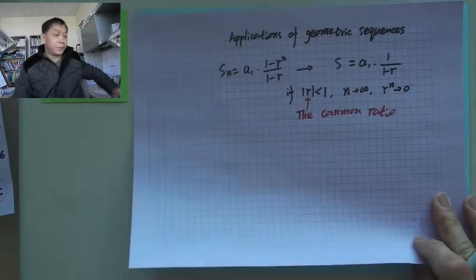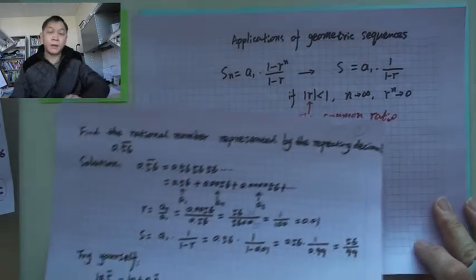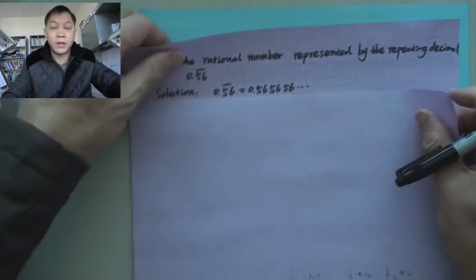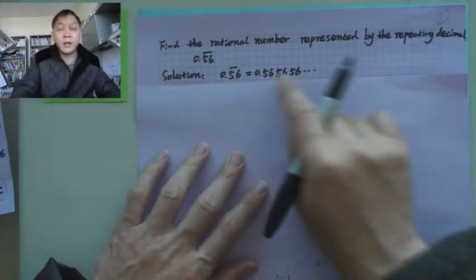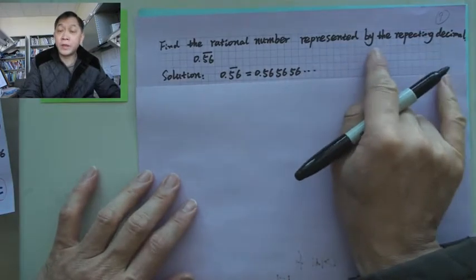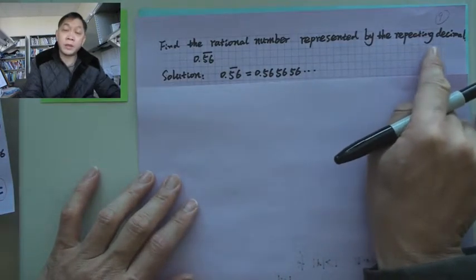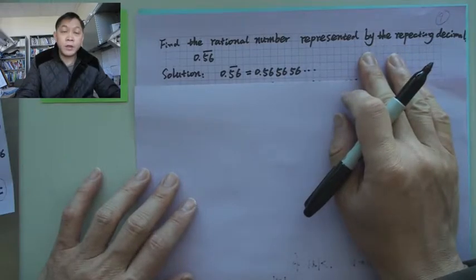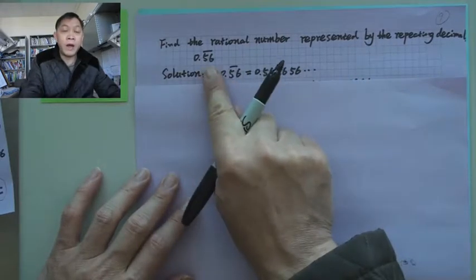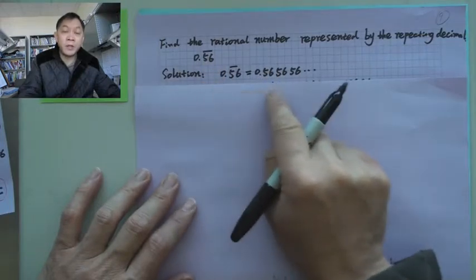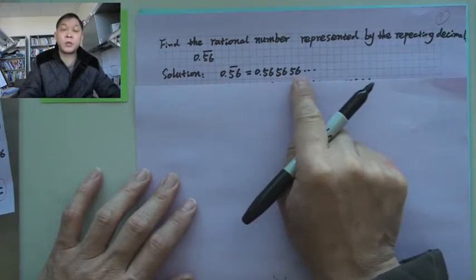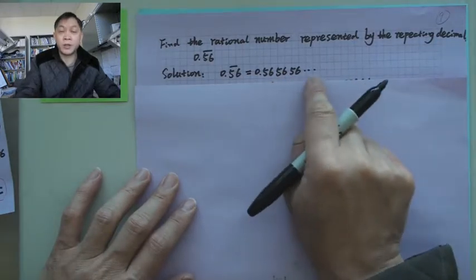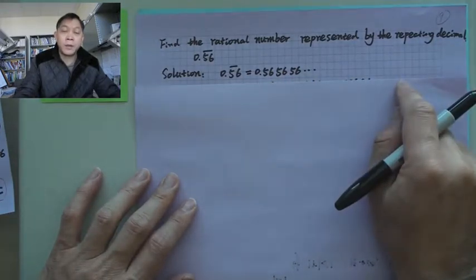Now look at this application. This one says find the rational number represented by the repeating decimal. So basically this one is 0.56 with a bar above it, which means the number is written in this way. 5, 6 repeats.